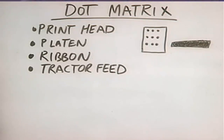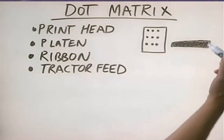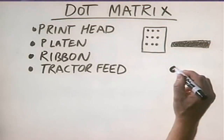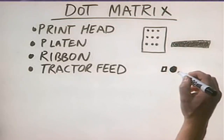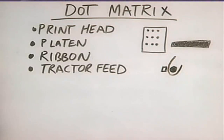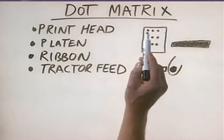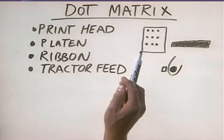How does this all work? The tractor feed pulls a piece of paper and rolls it around the platen. If you were to look at it end on, the platen would be here, the print head would be here, and the piece of paper would be rolled up around it. To print, the print head has a series of pins, and the number of pins can vary.